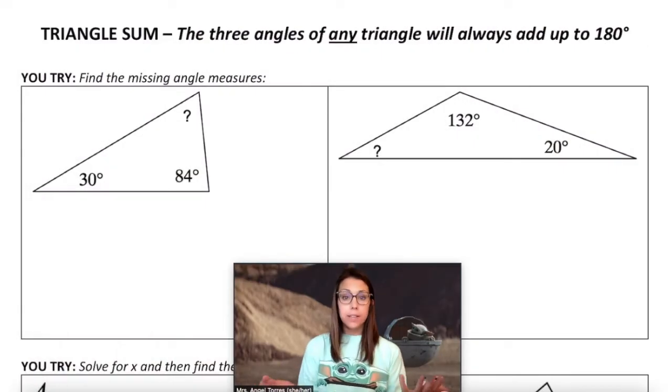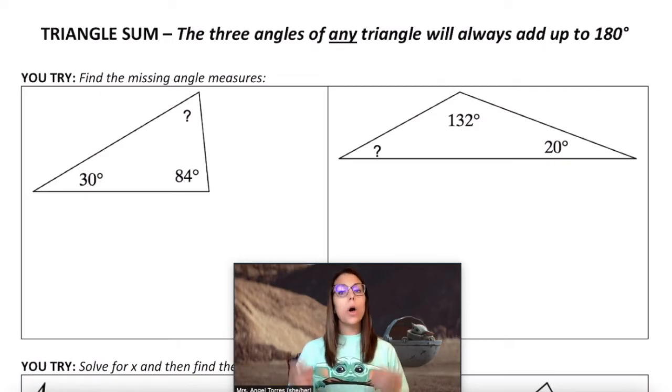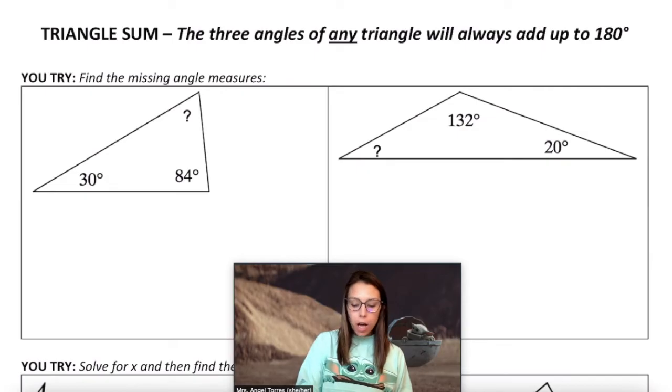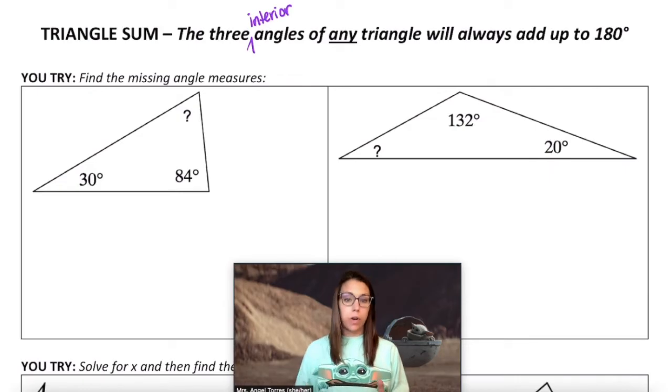Aside from classifying triangles the other thing we're going to talk about is called triangle sum. The three angles of any triangle will always add up to 180 degrees. And by the way we're talking about the three interior angles or the angles inside of the triangle.